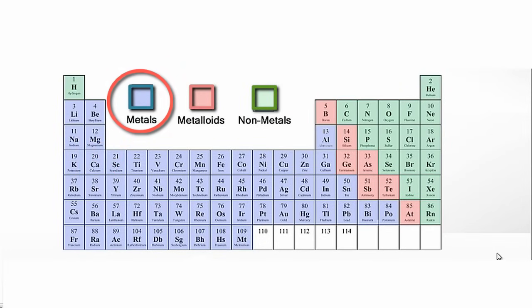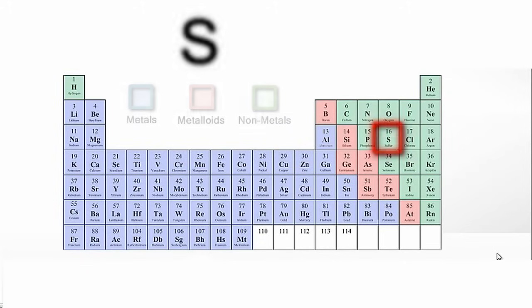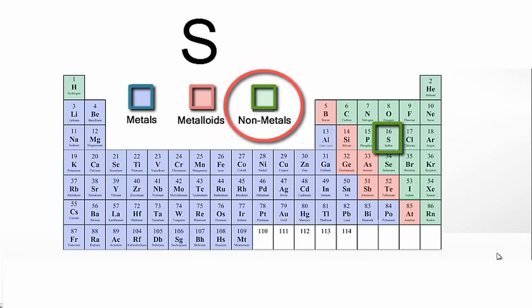Let's try another one. Sulfur. Since sulfur is on the right-hand side of the periodic table, we know that it's a non-metal.